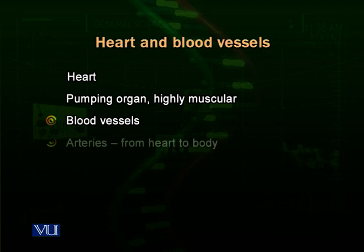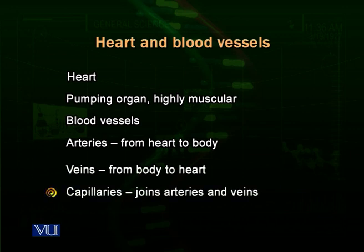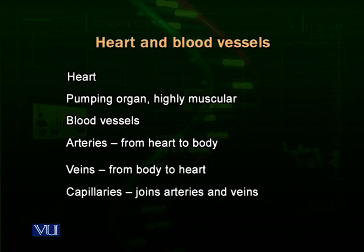Blood vessels are of three types: arteries, which take blood from the heart and distribute it towards the body; capillaries, which are the continuation of the arteries at tissue level; and veins. When arteries reach the organs, they divide into smaller arteries called arterioles. Arterioles, when they reach the tissues, are further divided and become very small, making the capillaries. Capillaries exchange materials with the tissues — oxygen, nutrients, metabolic waste, everything required. Then the capillaries join on the other side to make venules, and venules join together to make veins, which return blood back to the heart.